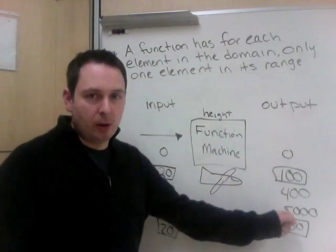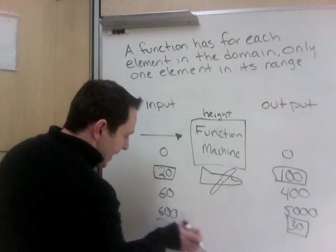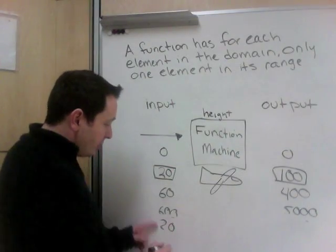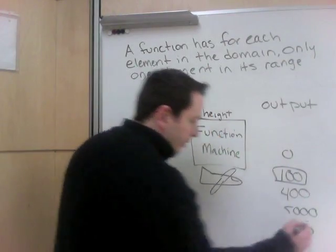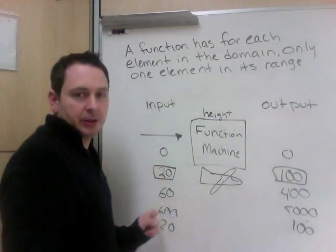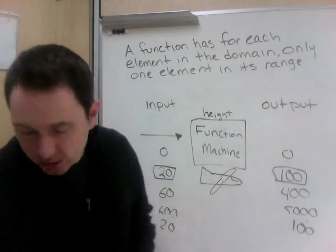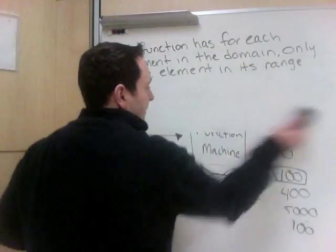That's a function. For each input, I get one output. If I put 20 in again and my function machine is working properly, I know my answer, I'm going to get 100 because for 20, there's always 100. Otherwise, it's not a function.